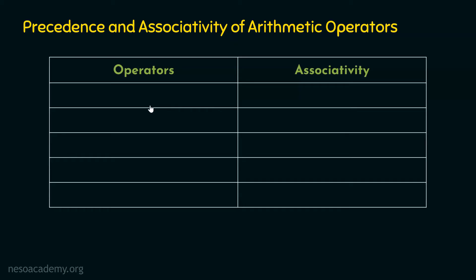In the first row, I will list the operator with the highest precedence among all, and in the last row, the operator or operators with the lowest precedence. The associativity of each operator will be shown here as well. Let's go through all the operators one by one.